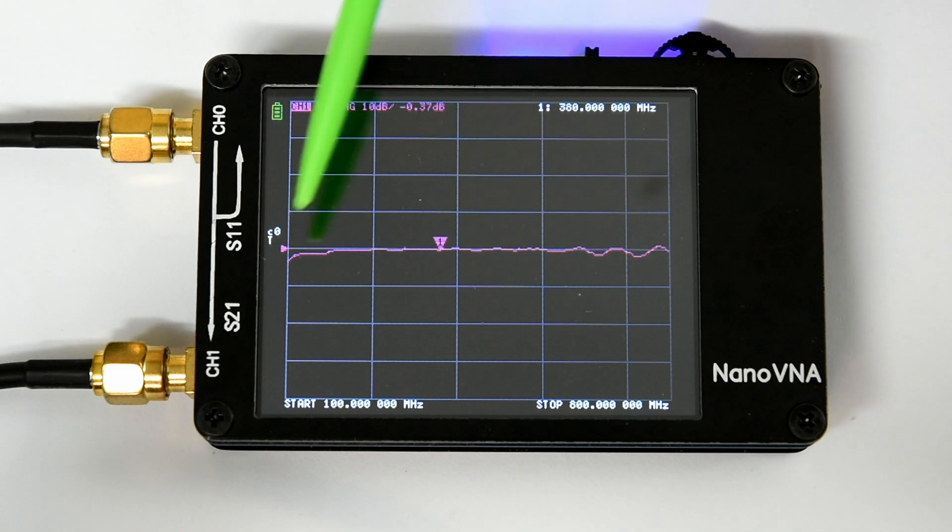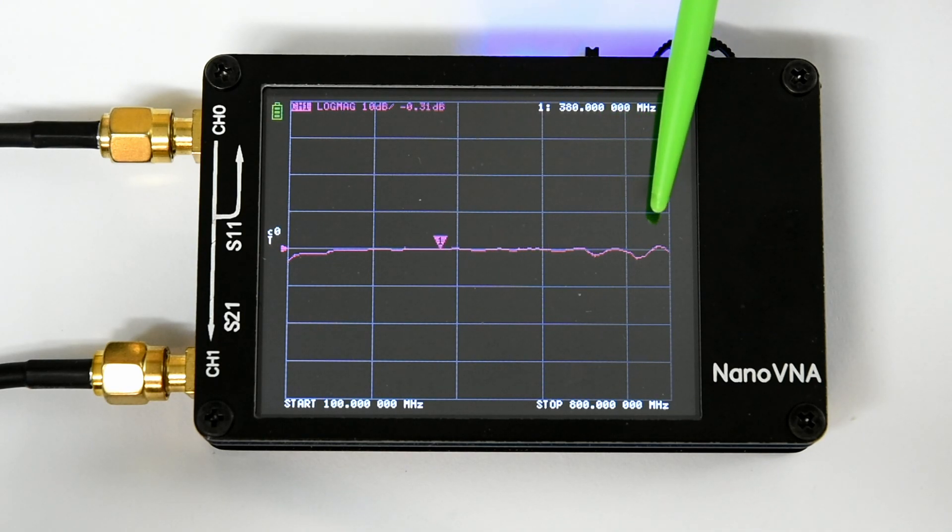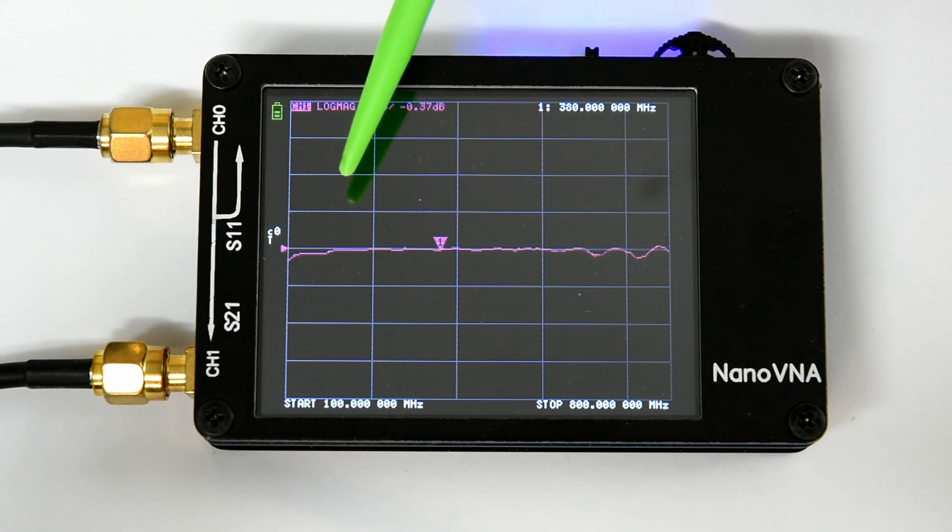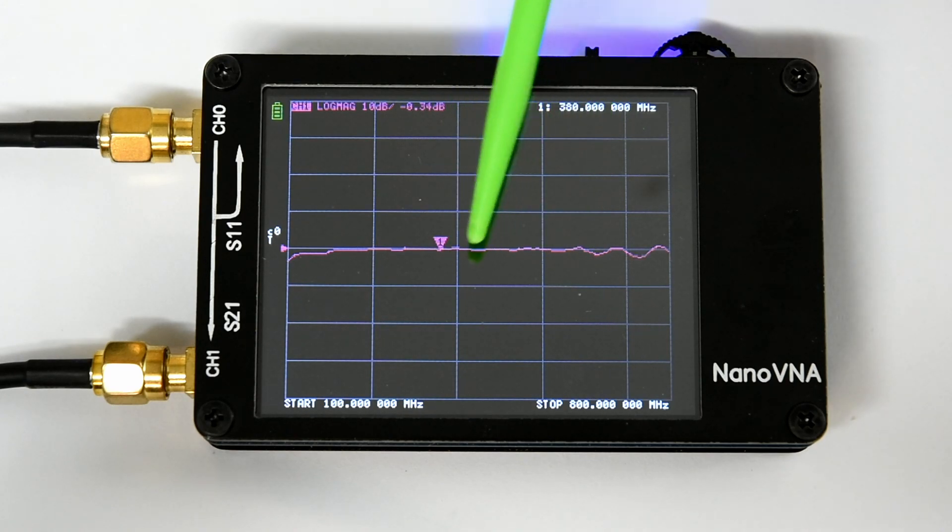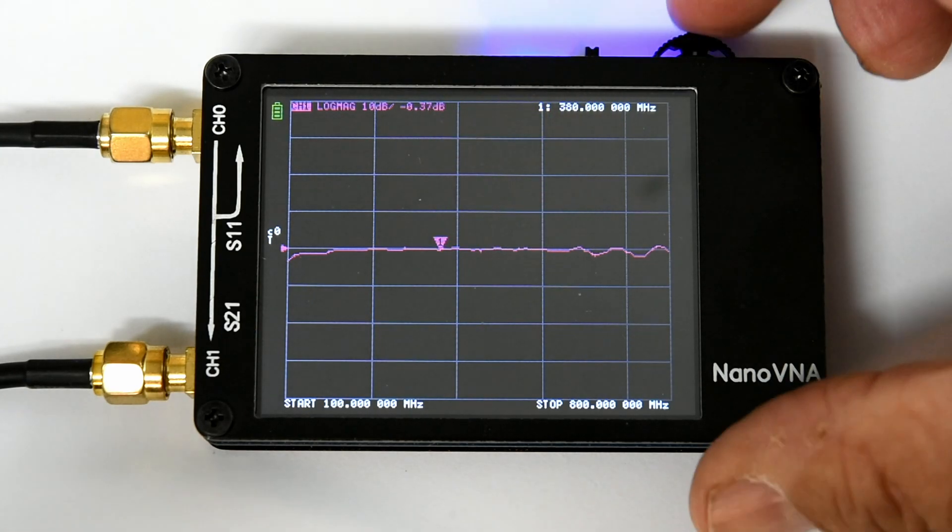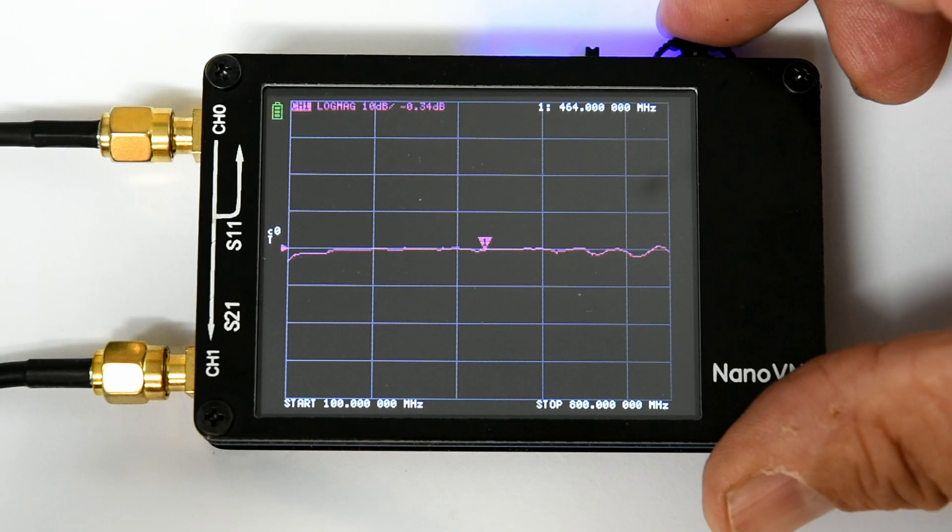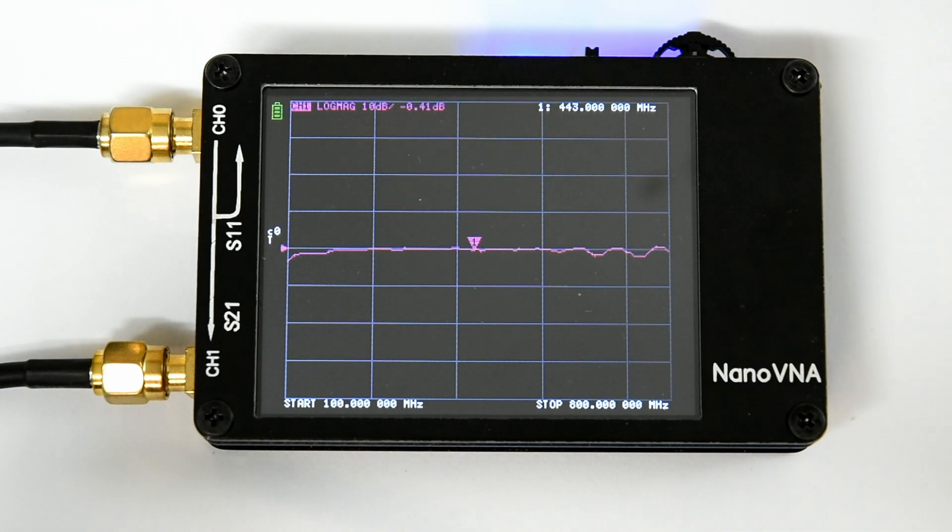A few little ripples at each end. Some of these I put down to the link between the two relays. Probably has some reflections. There's also some other components in there for the DC isolation and RF. So a few capacitors and inductors. So they may be having a little bit of an effect on that. But more or less flat. And it's flat where we need it. Which is around the, you know, 450 odd meg mark.